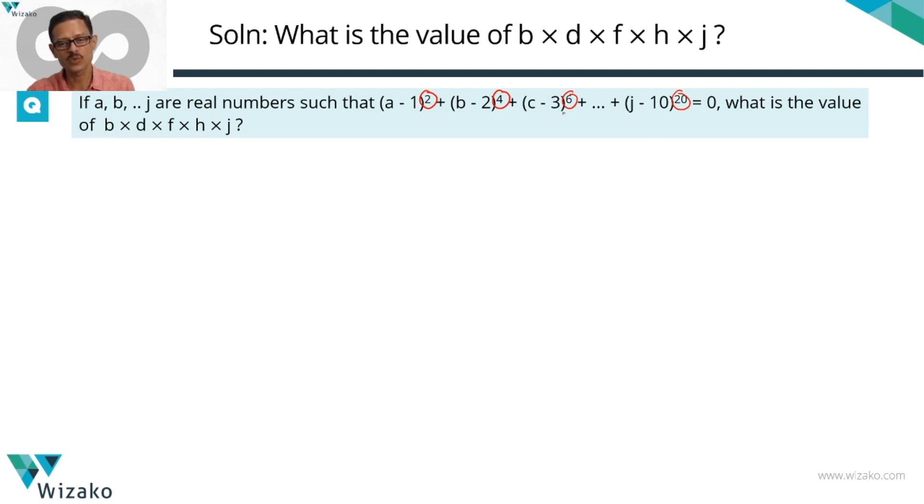In the first case it's 2, second case it's 4, third case it's 6, all the way up to 20 for the 10th of this expression. If the powers of real numbers are even, then those numbers cannot be negative. So none of these expressions—call this expression 1, 2, 3, all the way up to 10—not one of these 10 expressions can be negative.